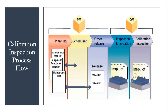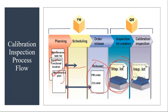From the PM side, there will be a lot of settings. They will first create test equipment, then create a task list, and then create a maintenance plan. When they schedule the maintenance plan, it will generate a calibration order. When the order is released, the system automatically generates an inspection.